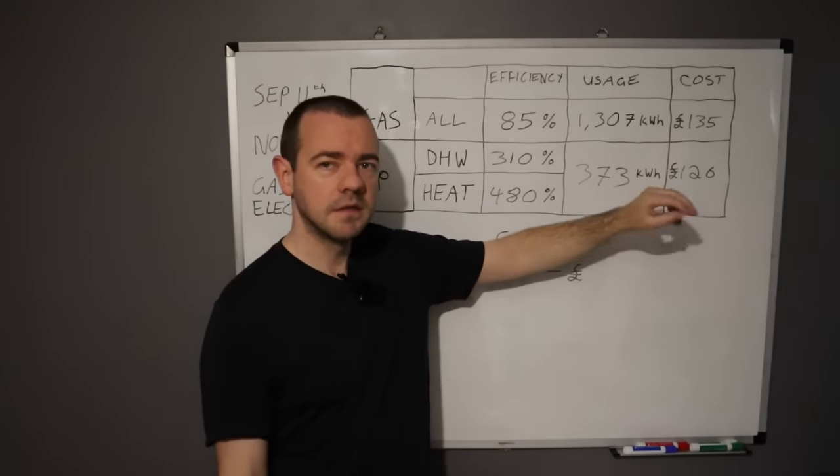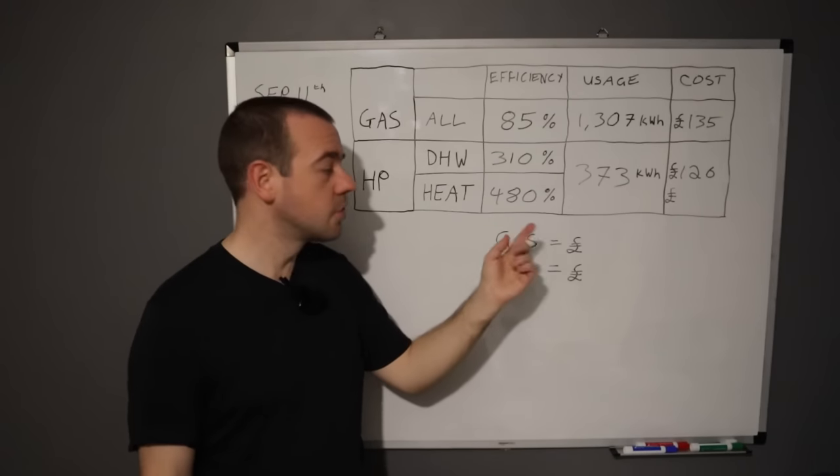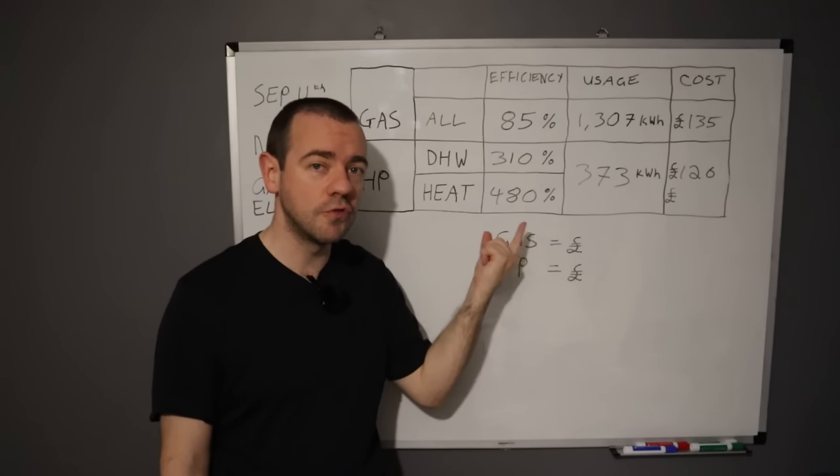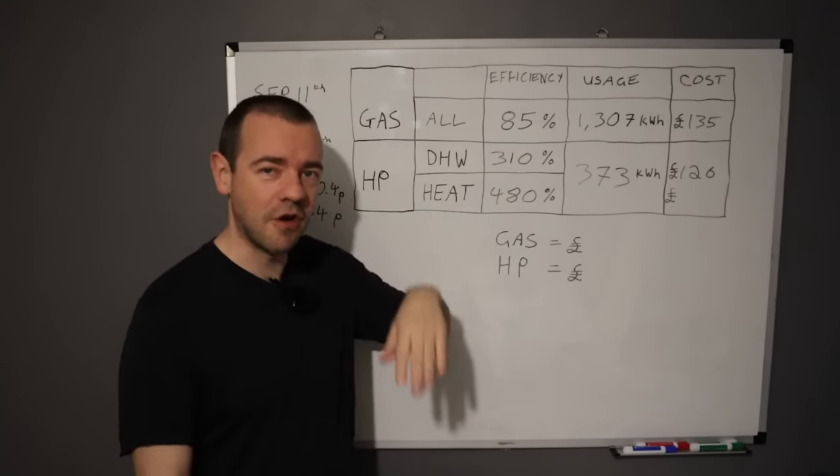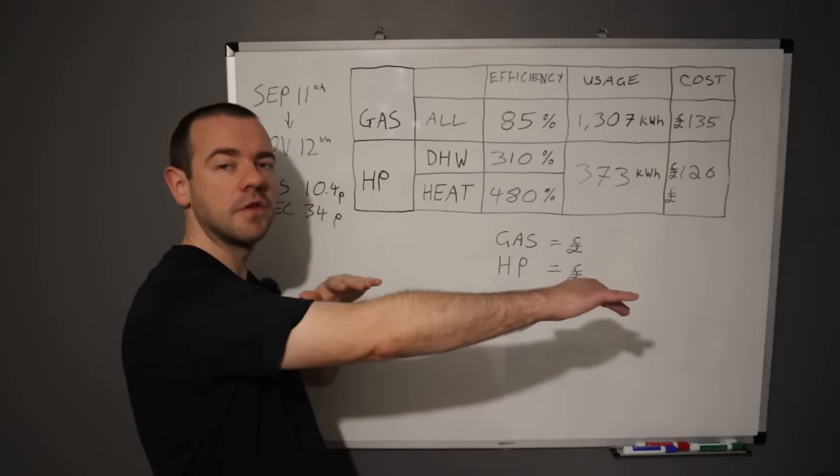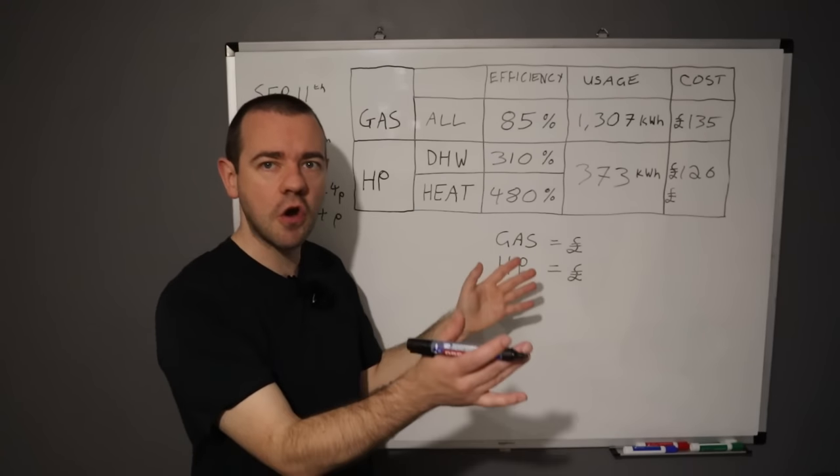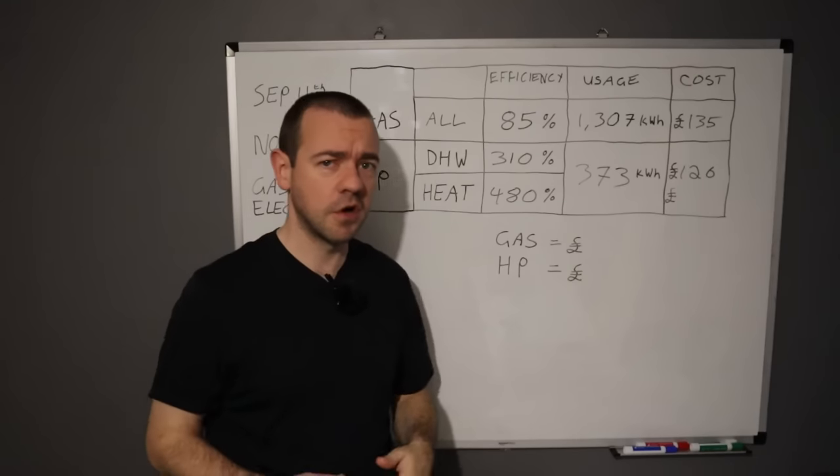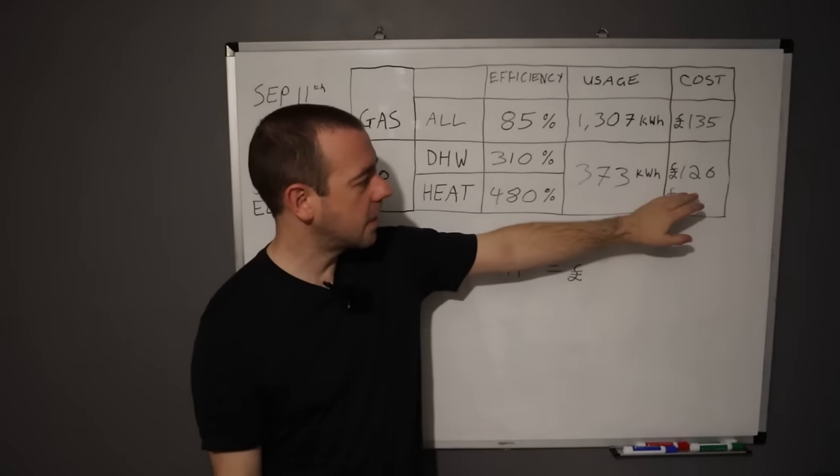But when you factor in this and the one-size-fits-all thing, then actually it's probably going to be cheaper. Again, summer that is going to go above 500% in summer, but it's obviously going to drop in winter. It's the average over the year, the seasonal or SCOP, that I'm going to eventually show you once I've got a year's worth of data.